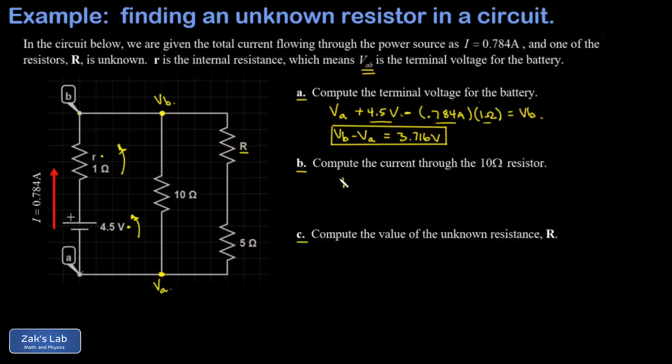I apply Ohm's law to this. I'll write it as I equals V over R. And I have a 3.716 volt potential difference over a 10 ohm resistor, which gives me a current of 0.3716 amps.